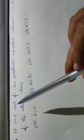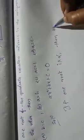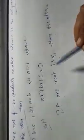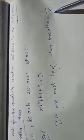Let's discuss some examples. If one root of the quadratic equation ax² + bx + c = 0 is the reciprocal of the other, then if one root is alpha, the other root is the reciprocal of the first root — that is, one by alpha. So the roots are alpha and one by alpha.